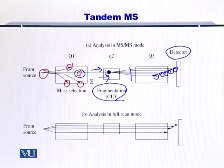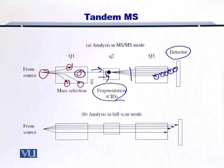If you have ECD or ETD — that is, electron capture dissociation or electron transfer dissociation — then the type of ions produced will be different.